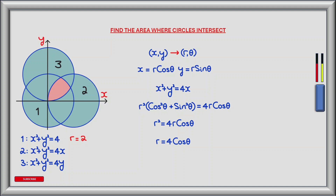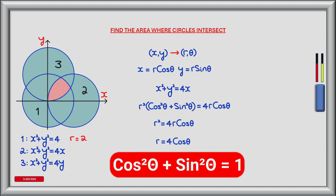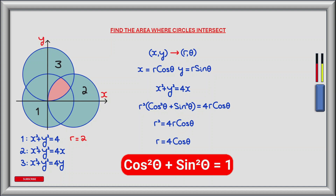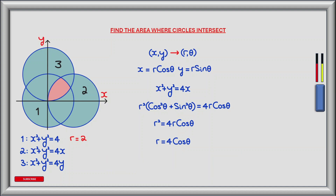For circle 2 we have the equation x squared plus y squared equals 4x. Making the substitution for x and y gives r squared times the bracket of cos squared theta plus sin squared theta equals 4r cos theta. Using the trig identity where cos squared theta plus sin squared theta equals 1, we have r squared equals 4r cos theta. Dividing each side by r we're left with r equals 4 cos theta.